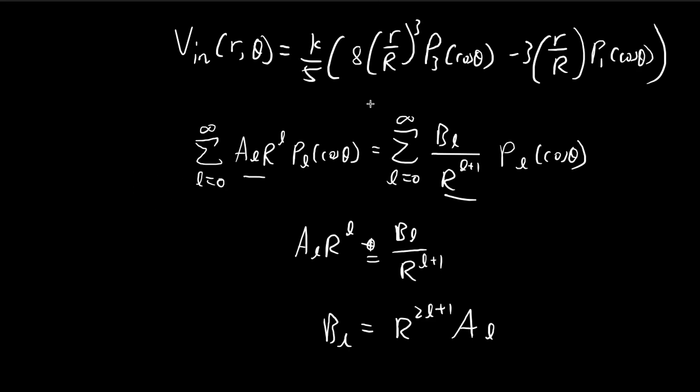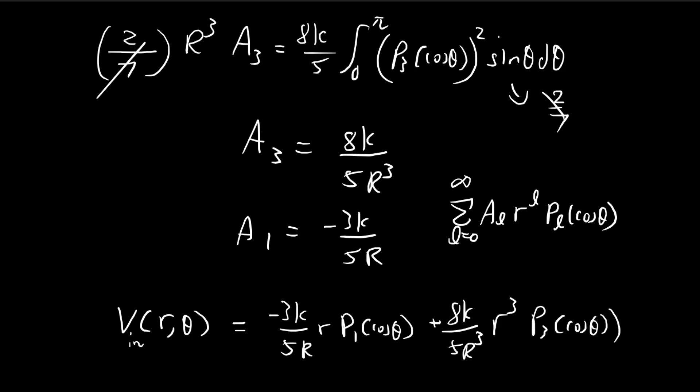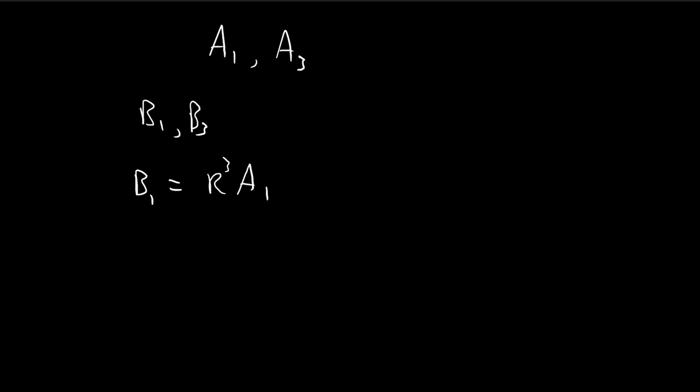So B1 is equal to, substituting L=1, R to the power of 3 times A1. And A1 is equal to negative 3k over 5r. So there we have it, we've found B1 without having to wrestle with all the math we just did before.